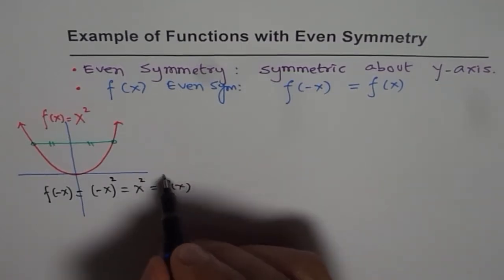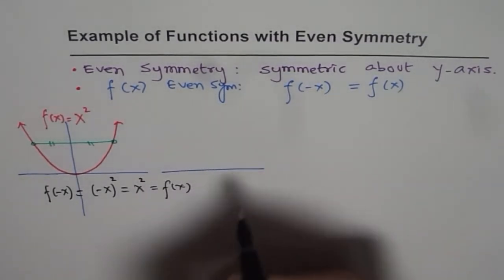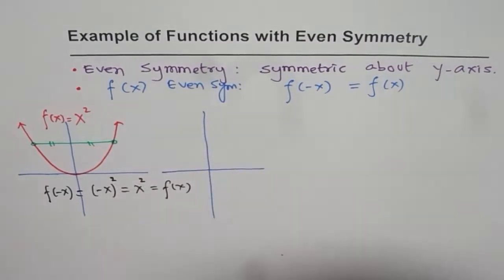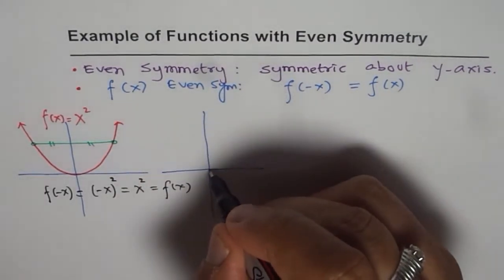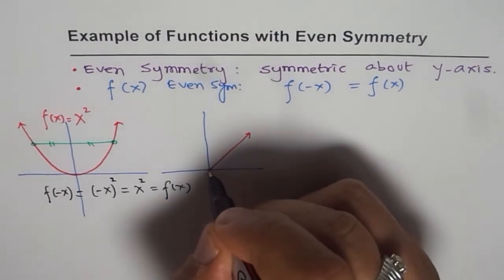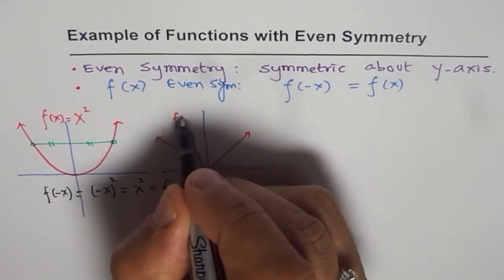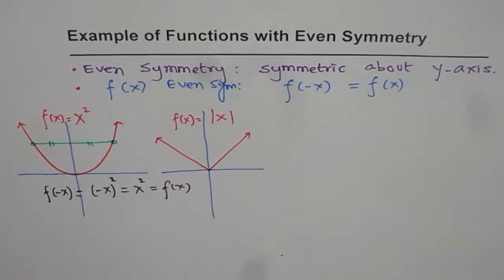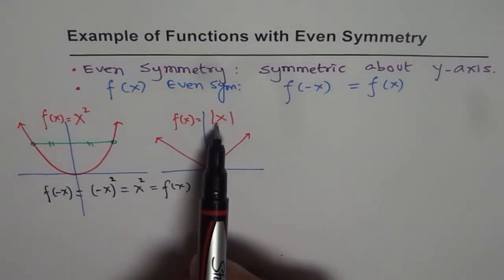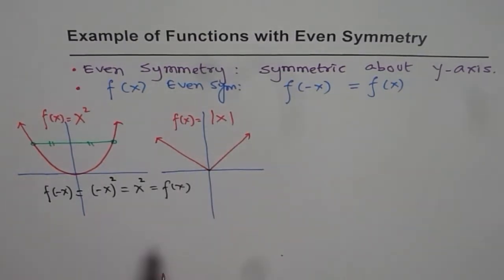So let me give you more examples here. Another example which you will always come across is the absolute function. Absolute function also has even symmetry. That is the function f(x) equals the absolute value of x. Now, absolute x is even since if I replace x with -x, you get +x.